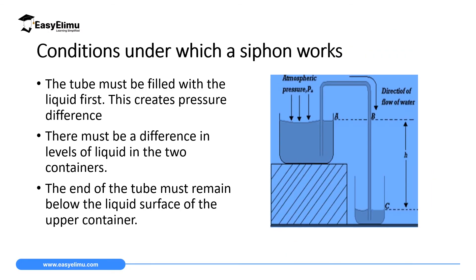When setting up your siphoning process, you must make sure certain conditions are met for it to work perfectly. The first condition is that the tube must be filled with the liquid first. This tube must be filled with fluid completely, and the reason is to create the pressure difference. From points B and C, if there is no liquid in the tube, you are not going to get the pressure difference which facilitates the flow of liquid to the tank at point C. So you must fill it first.